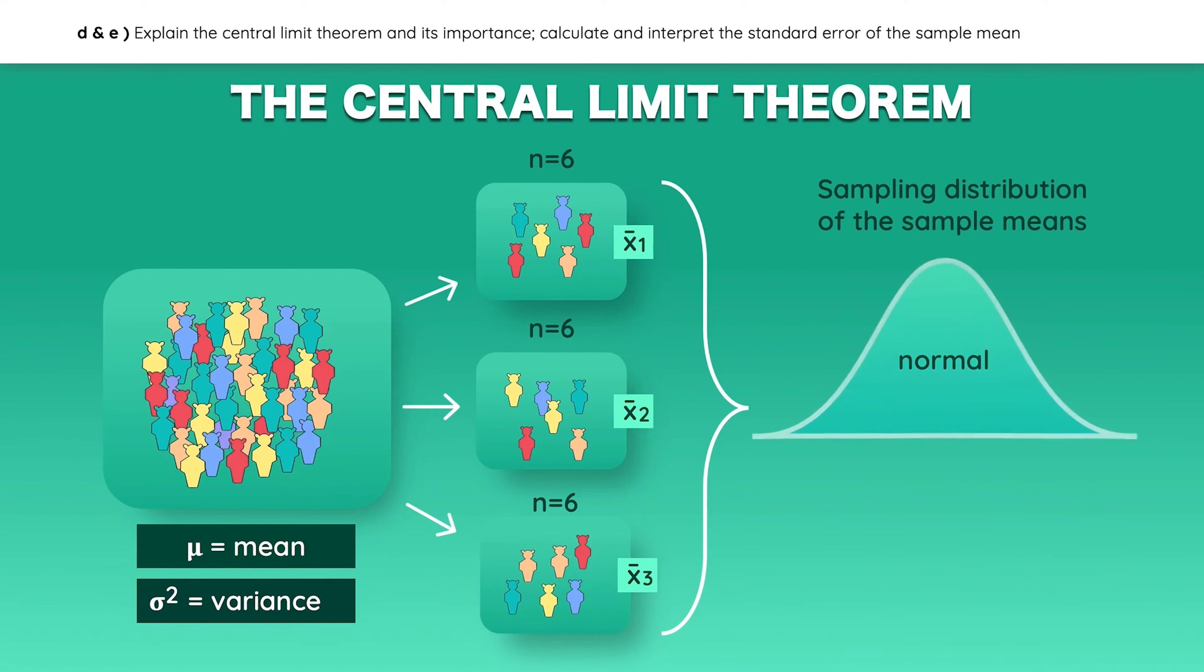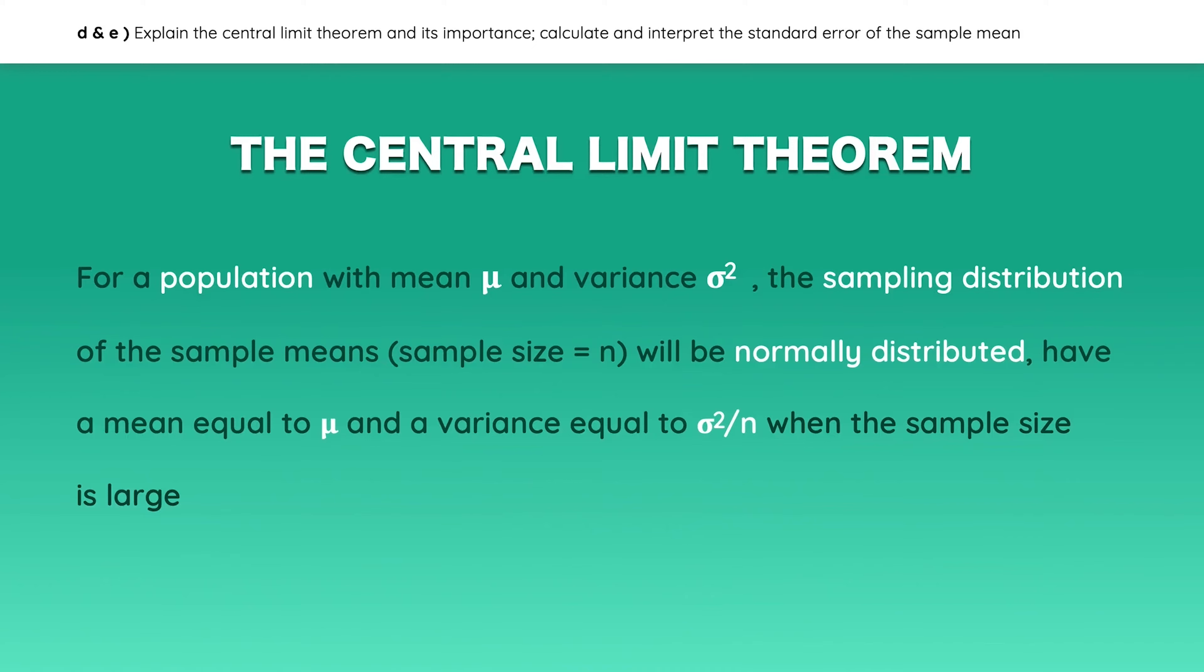Also, the sample distribution will have a mean equal to μ, a variance equal to σ² over n, and a standard deviation equal to σ over square root of n. It is important that you remember that this is also called the standard error. And just in case, here is the central limit theorem again, but in writing. Pause the video if you need to read it one more time for good measure.